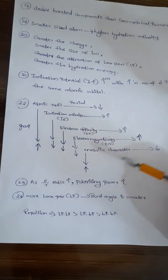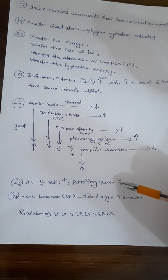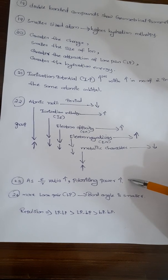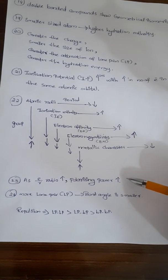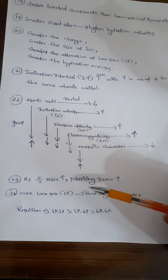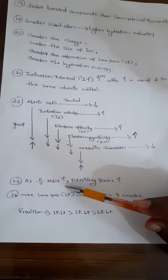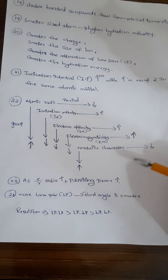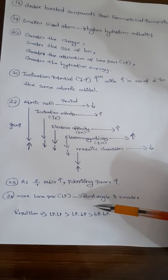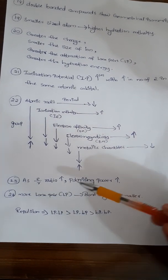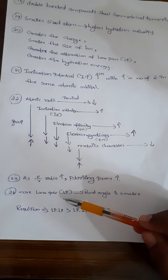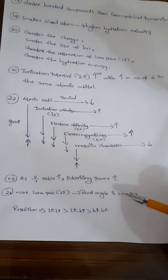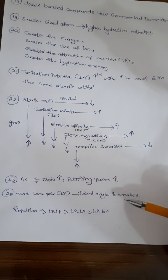Next point: as E/R ratio increases, then polarizing power also increases. Next point: if more number of lone pairs are present, then bond angle will be smaller.